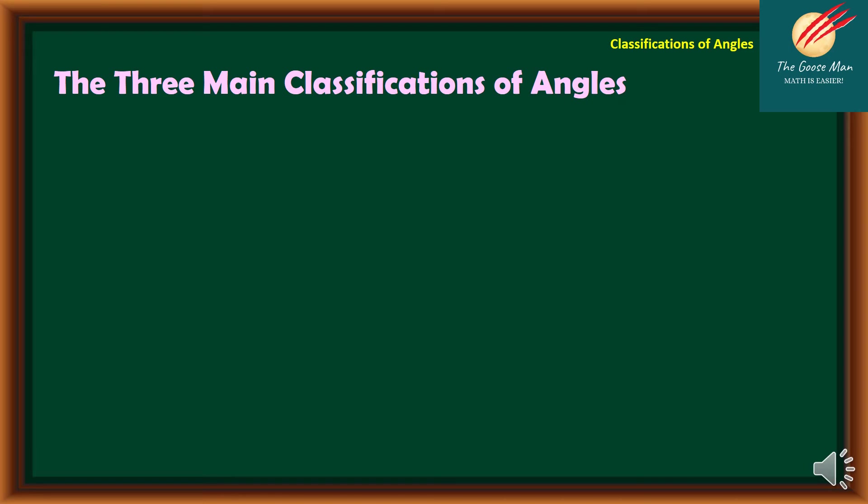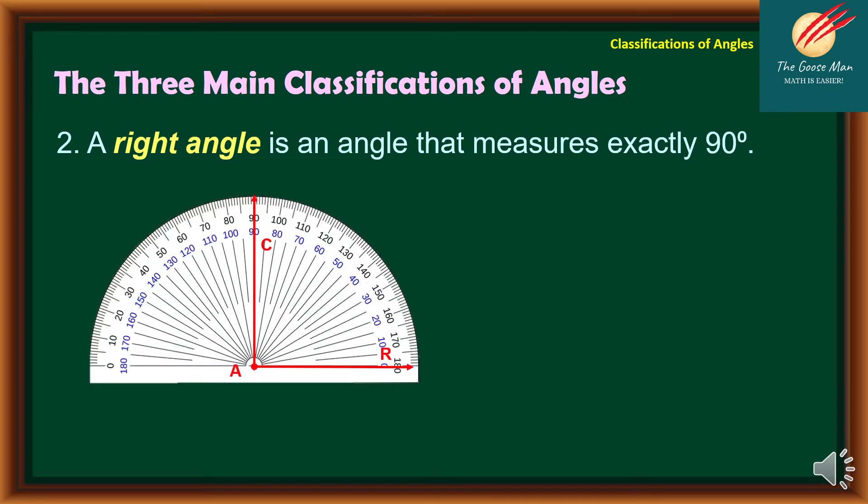The second type or classification of angles is a right angle. A right angle is an angle that measures exactly 90 degrees. In our example, we have angle CAR. Take note that the measure of angle CAR is equal to 90 degrees. Similarly, we can say angle RAC is equal to 90.